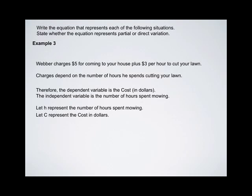Since we're going to use H to calculate the value of C, we'll write out our equation. C is equal to the $5 for coming to your house plus a constant multiple of our rate of change, or $3 per hour for every hour spent mowing, or C equals 5 plus 3H.